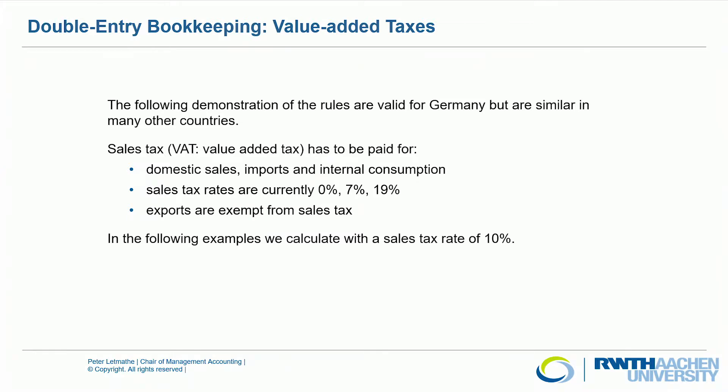In Germany we have sales taxes or value-added taxes. They have to be paid for all domestic sales, imports and internal consumption, but not for exports. The sales tax rates are currently 0% for some products like in the educational sector, 7% generally for food, or 19% for most products.